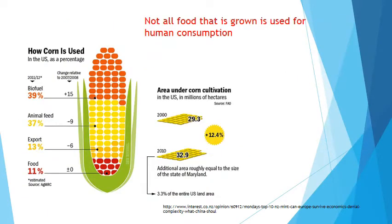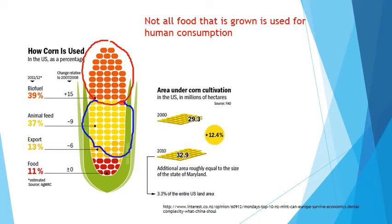This picture on corn shows us that not all food grown is actually used for human consumption. Almost half — 39% — is being grown for biofuel, which is an alternative fuel source. The next 37% is actually being used for animal food, so we haven't even got to humans being fed yet. 13% is for exporting, and then this last 11% of all corn grown in the world is actually used for people to eat as food.